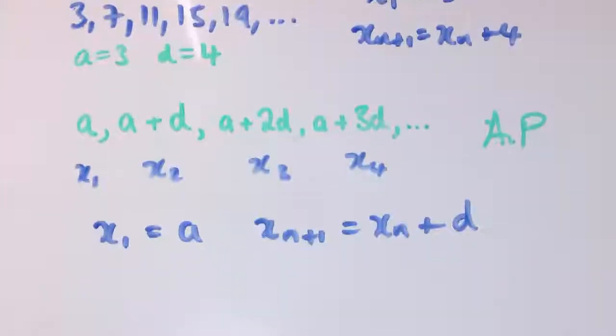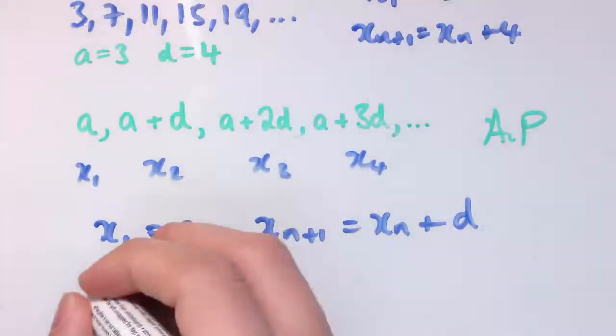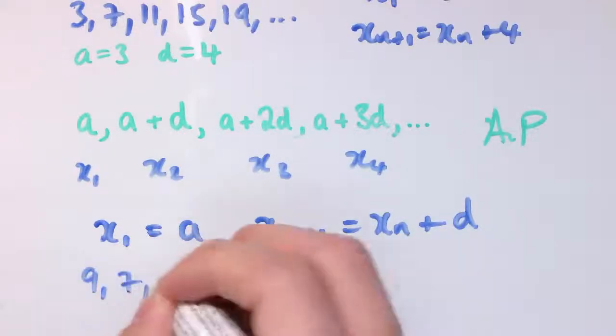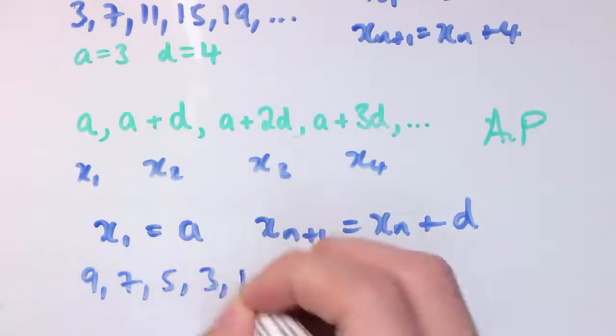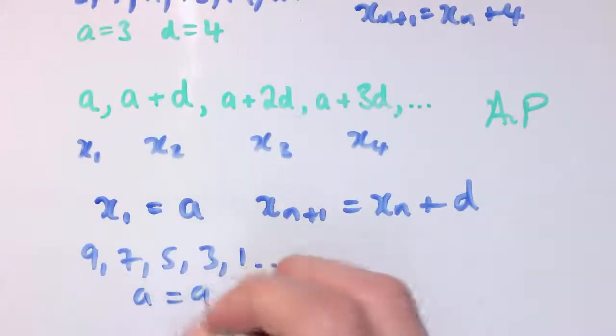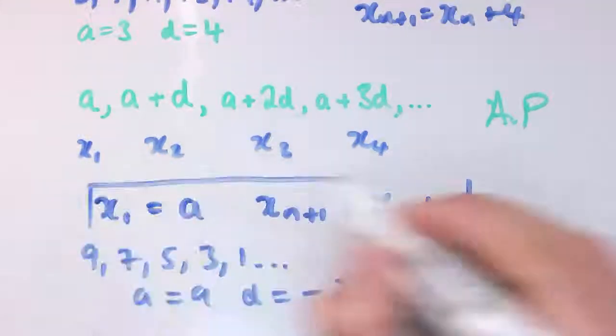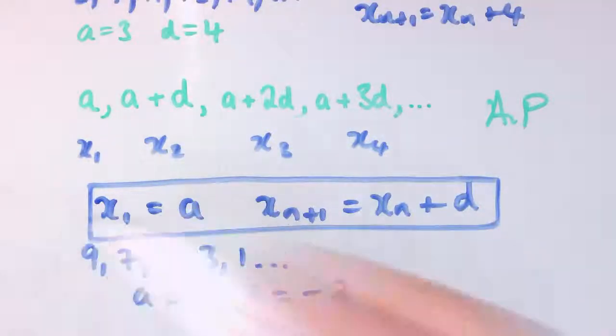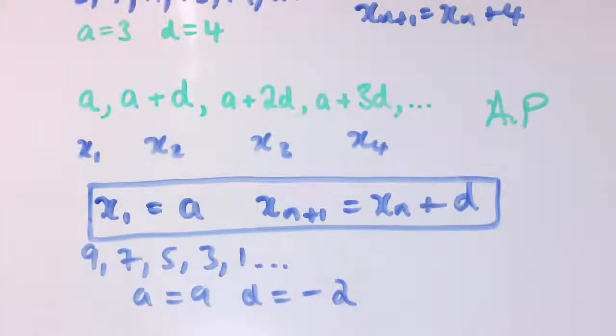d could be negative as well. It could have a sequence, say 9, 7, 5, 3, 1. This one would have a equals 9 and d equals minus 2. To go from one term to the next we're subtracting 2. That's my general form as a term-to-term definition of an arithmetic progression.